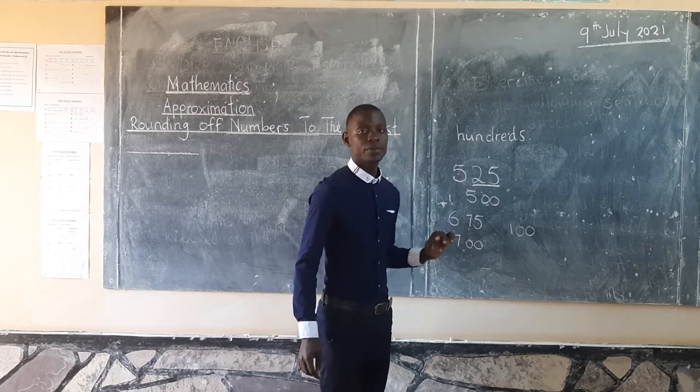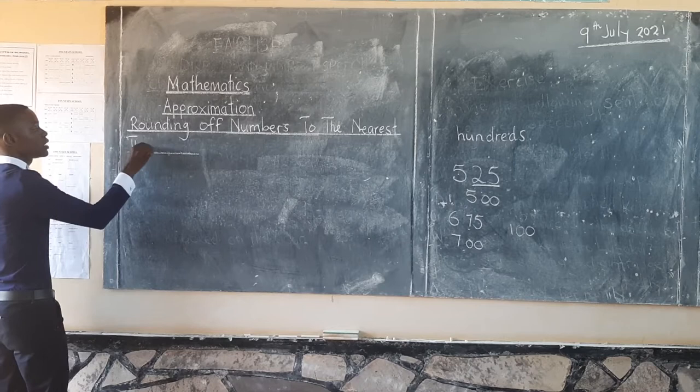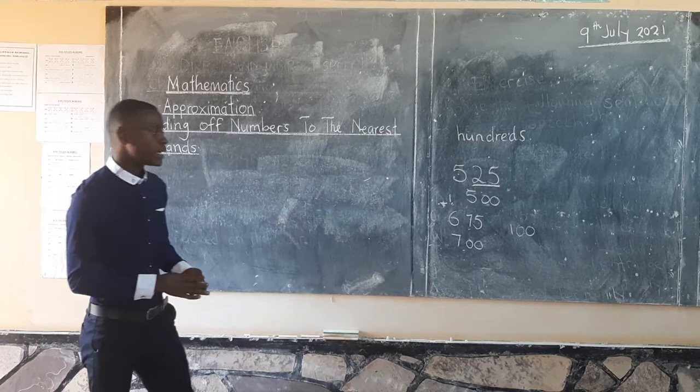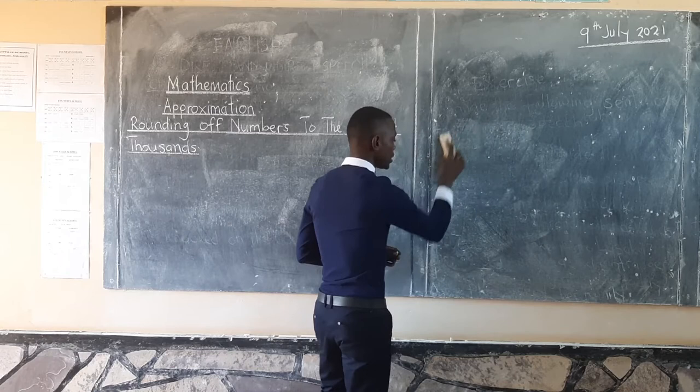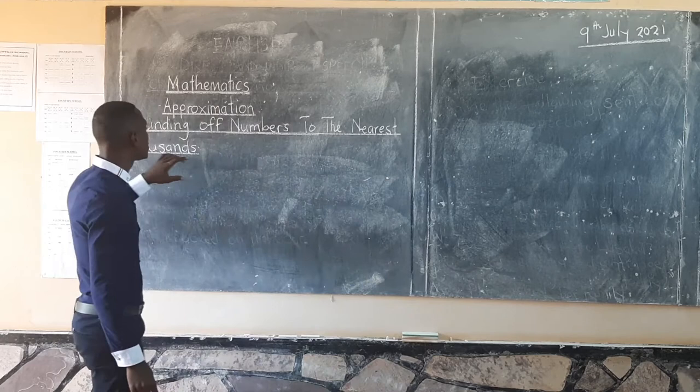Today we will look at rounding off numbers to the nearest 1,000. Just like last time we looked at steps to round off to the nearest 100, today we will also look at steps to help us round off numbers to the nearest 1,000.